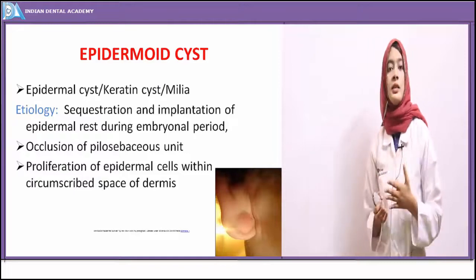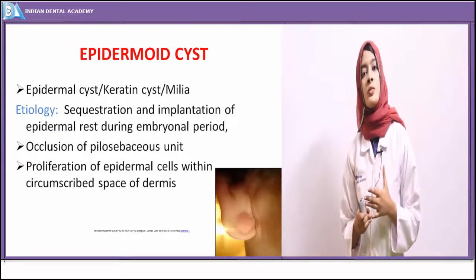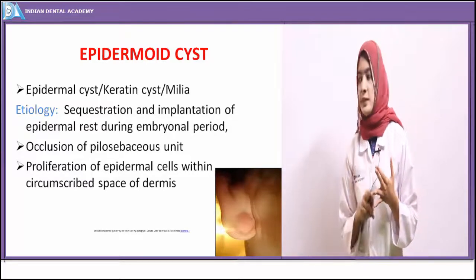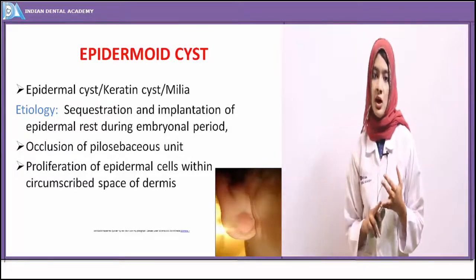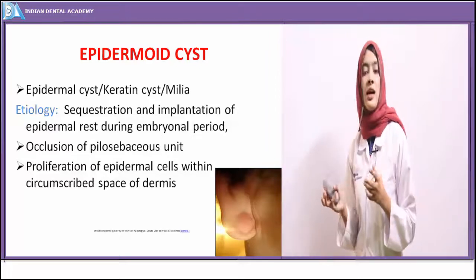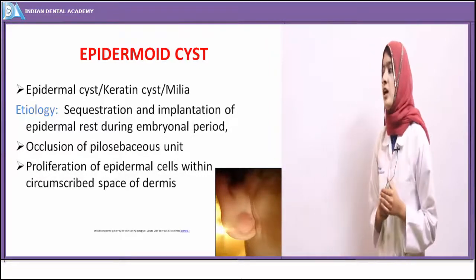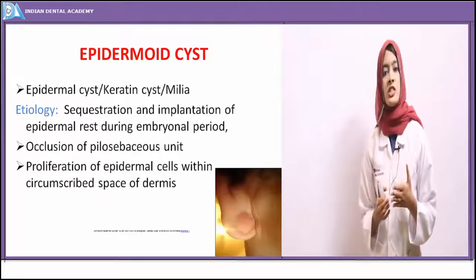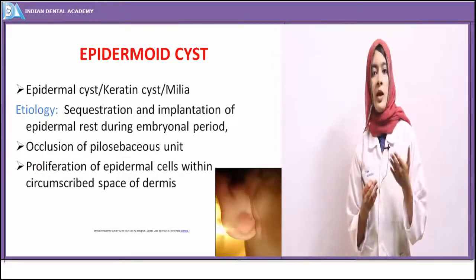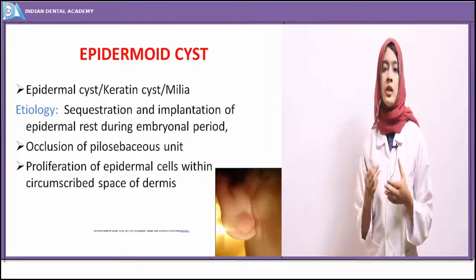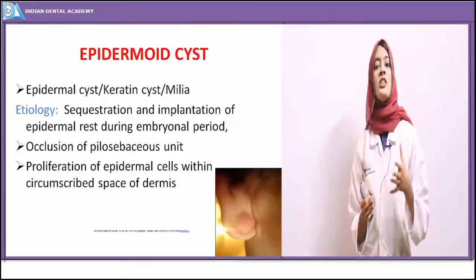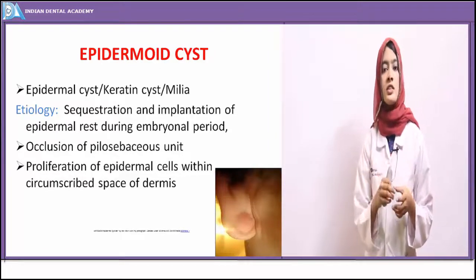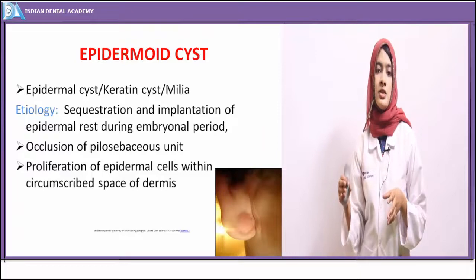The next cyst is the epidermoid cyst, also called epidermal cyst, epithelial cyst, keratin cyst, or milia. Milia are miniature epidermal cysts. The etiology is again the sequestration and implantation of epidermal rest cells during the embryonic period. This implantation leads to occlusion of the pilosebaceous unit — the sebaceous gland openings present on the skin become occluded.